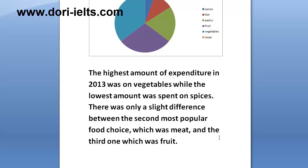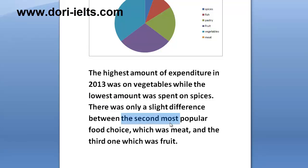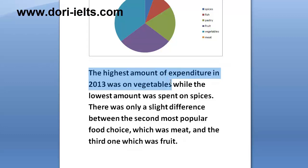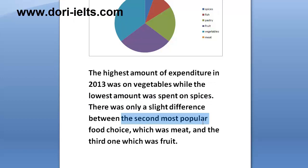As you can see, we firstly focus on the highest and the lowest values — the highest amount of expenditure and the lowest amount of expenditure — and then on whatever else attracts our attention. In this case, we referred to the second most popular food choice and the third one, and we made a comparison between the two. You should remember that you should refer to four points in your overview: the highest amount of expenditure, the lowest amount of spending, the second most popular choice, and the third most popular choice.